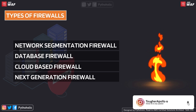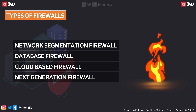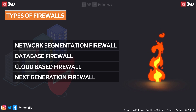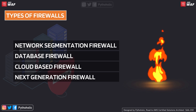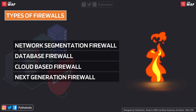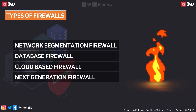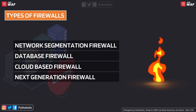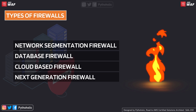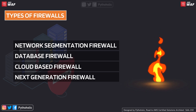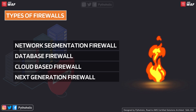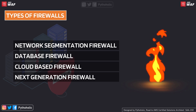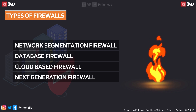The next-gen firewall is part of the third generation of firewall technology, combining a traditional firewall with other network device filtering functions such as an application firewall using inline deep packet inspection and an intrusion prevention system. Network filtering involves controlling access by analyzing incoming and outgoing packets based on source and destination IP addresses. It is a combination of multiple features in one firewall, hence the name next-gen firewall.